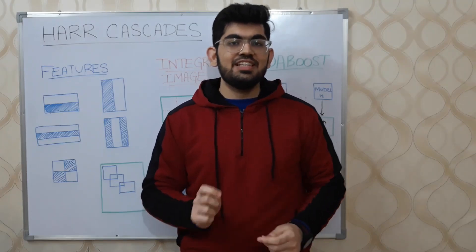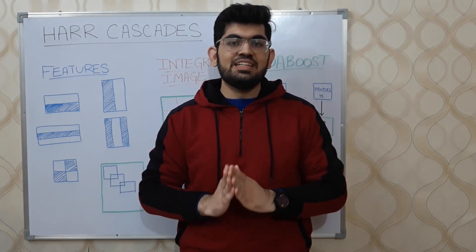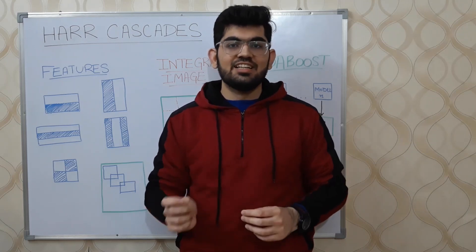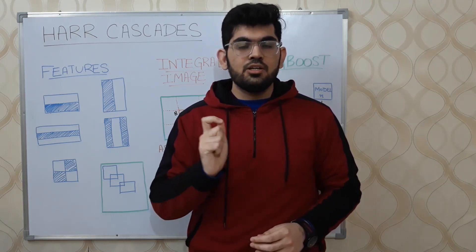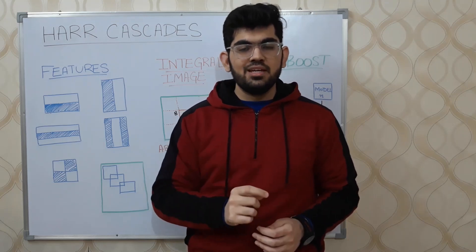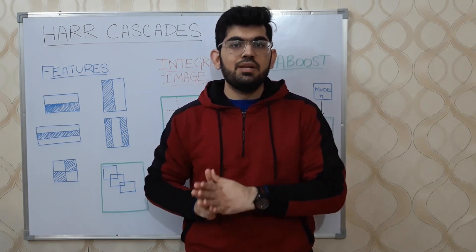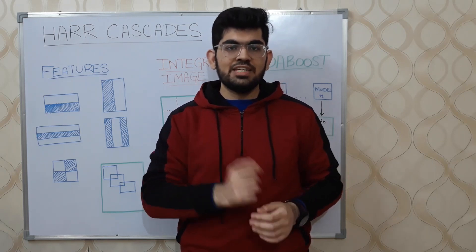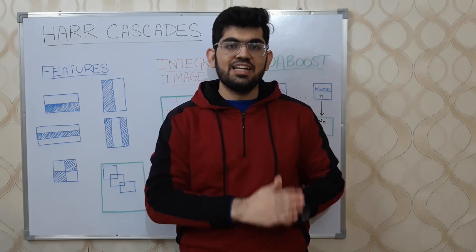Now let us start our discussion with HAAR Cascades. HAAR Cascade is a general object detection technique that is mainly used for facial recognition. HAAR Cascades, or the Viola-Jones algorithm, do not make use of any deep learning technique. However, they make use of primitive machine learning approaches. Compared to the deep learning approaches, HAAR Cascades do not perform well in terms of accuracy. However, their detection speeds are way better than the deep learning techniques.